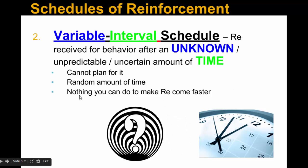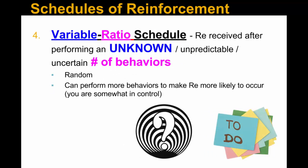Let's compare using tantrums as an example. A variable interval tantrum is when a parent always gives in, but it's just a matter of time — sometimes mom gives in right away, other times you have to throw the tantrum longer, but eventually she caves. A variable ratio tantrum is when parents are inconsistent and sometimes give in, sometimes don't — so the child keeps trying because maybe this time it will work.